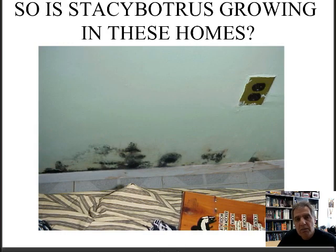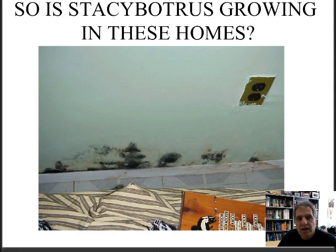There is one mold, Stachybotrys chartarum, that is toxic — we call this the toxic mold. It's rather slow growing and I don't suspect it's coming out just yet. All the other mold species — Penicillium, Aspergillus, Cladosporium — will likely take off first and have a competitive advantage, thereby keeping Stachybotrys probably under control. However, Stachybotrys contamination is serious.